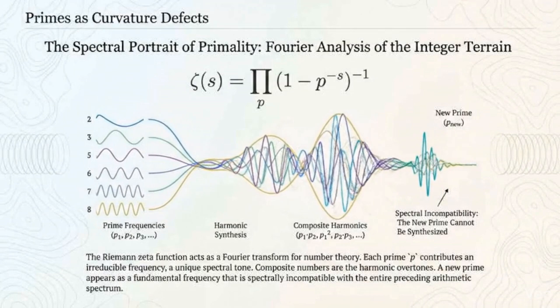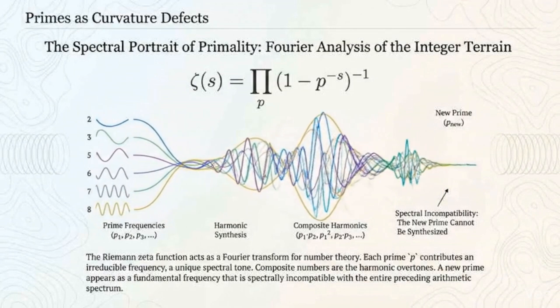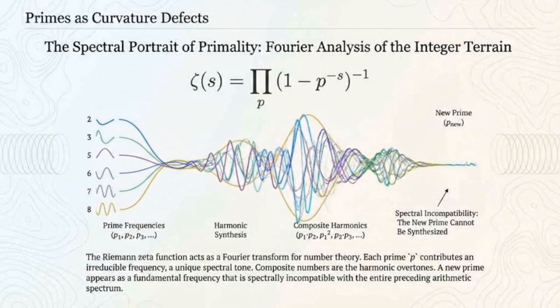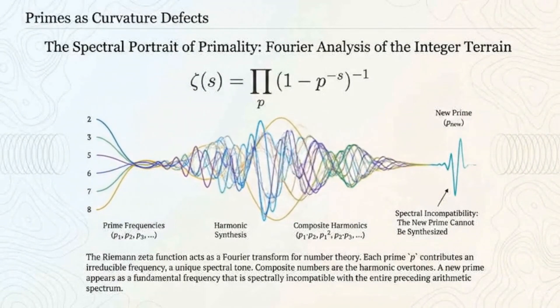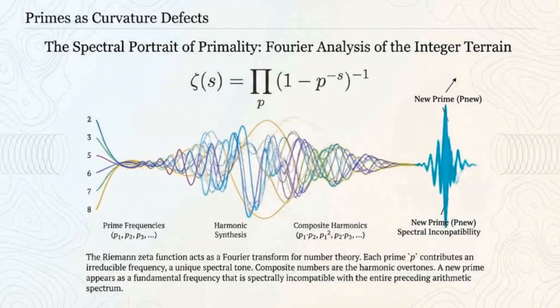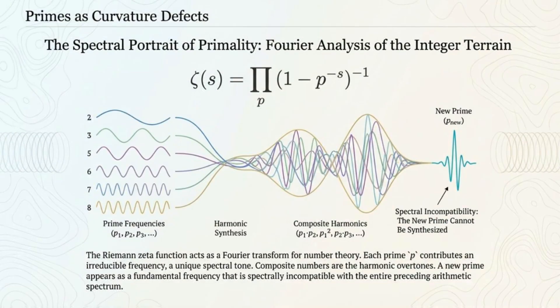Primes, as curvature defects, are visible in the spectral portrait of primality. The Riemann zeta function acts as a Fourier transform for number theory. A new prime appears as a fundamental frequency that is spectrally incompatible with the entire preceding arithmetic spectrum.